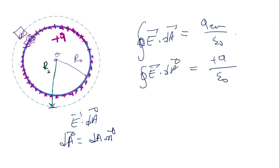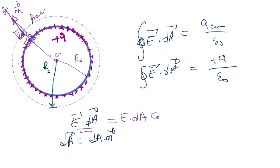The term E dA means the area element dA times the normal to this area. If I take this element of area, I call it dA, the normal to dA is the vector perpendicular to the area element. The electric field is in the same direction because if I calculate the electric field here, it will point away from the charge — in the same direction as the normal. That means this term will be just E dA cosine of theta. Theta here is zero because the angle between the normal and the electric field vector is zero, and cosine of zero is one, so E dA is simply E dA.